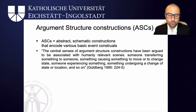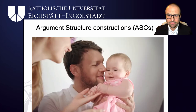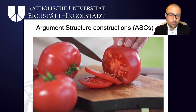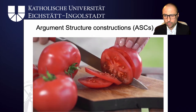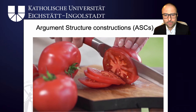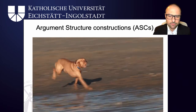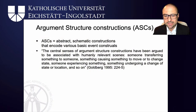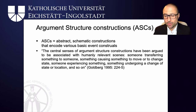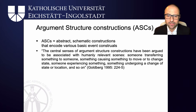Someone acting on an object or a person, one person acting on another person where it's clear that the first person is more actively involved — like a father kissing their child, or someone slicing tomatoes where you're actively involved and the tomato is changing its state. Or you see a dog running across a beach going from left to right. All of these are scenes we experience throughout our lives, and because they are so salient — because something moves, something is affected — they stay with us. We store these and associate specific syntactic patterns with them.